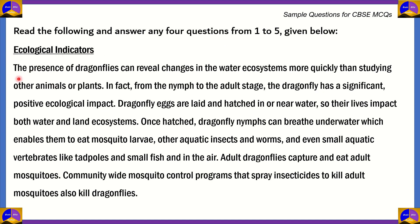Ecological indicators. The presence of dragonflies can reveal changes in water ecosystems more quickly than studying other plants or animals. From the nymph to the adult stage, the dragonfly has a significant positive ecological impact. Dragonfly eggs are laid and hatched in or near water, so their lives impact both water and land ecosystems. Once hatched, dragonfly nymphs can breathe underwater, which enables them to eat mosquito larvae, other aquatic insects and worms, and even small aquatic vertebrates like tadpoles and small fish. In the air, adult dragonflies capture and eat adult mosquitoes. Community-wide mosquito control programs that spray insecticides to kill adult mosquitoes also kill dragonflies.